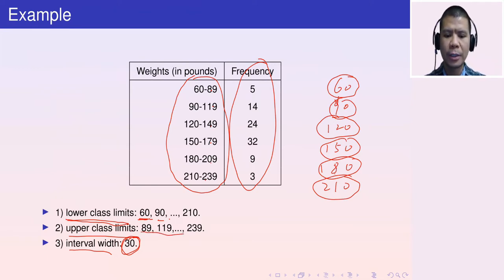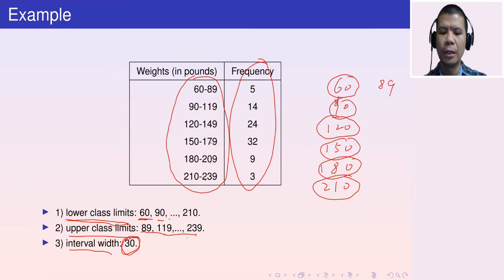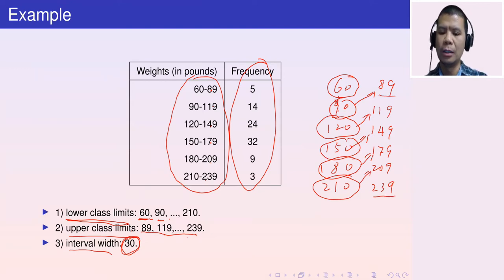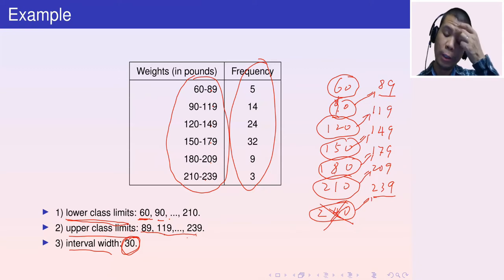For the upper class limits — 89, 119, 149, 179, 209, 239 — each is one less than the next lower class limit: 90 minus 1 gives 89, 120 minus 1 gives 119, 150 minus 1 gives 149, 180 minus 1 gives 179, 210 minus 1 gives 209, and 240 minus 1 gives 239. This method determines all the upper class limits.